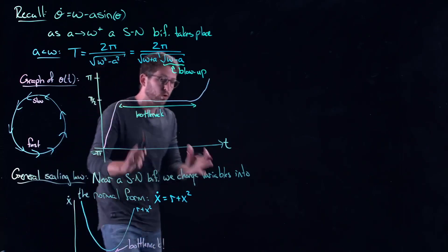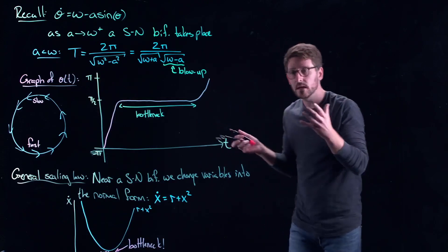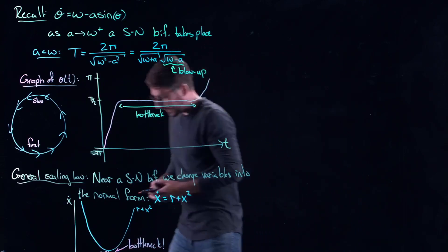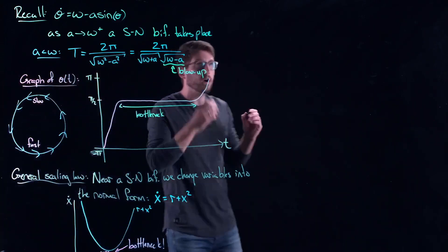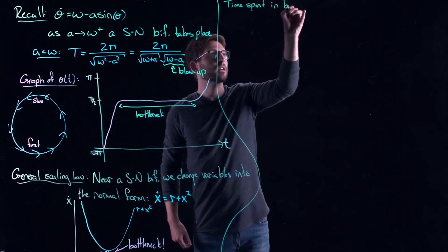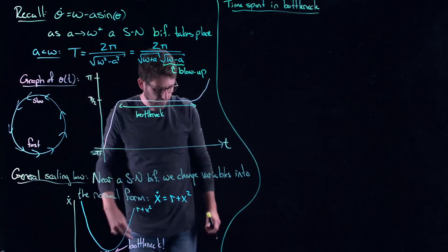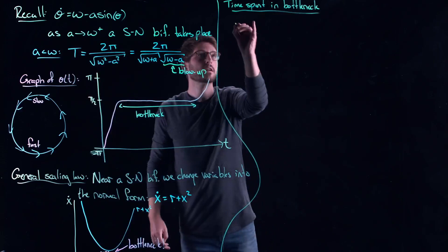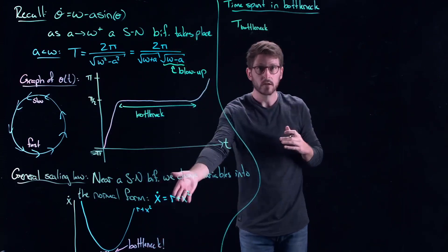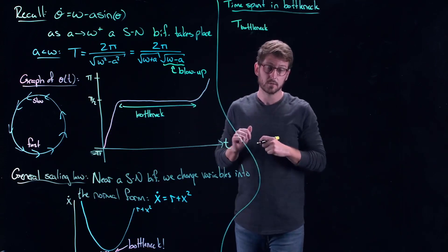So even if we haven't done any work yet, you can kind of see the bottleneck taking place. When r is positive, you get this little region where you haven't seen a bifurcation take place yet but your velocity slows way, way down — it's really close to zero. That's the bottleneck. And in fact, we can approximate the time spent in the bottleneck. I'm going to do it for the normal form. Why for the normal form? Remember, it's always going to govern anything where a saddle node bifurcation takes place.